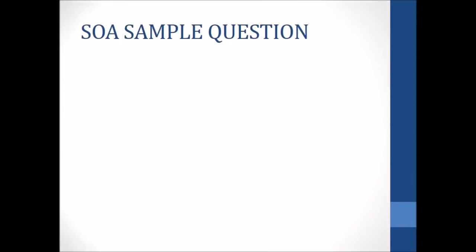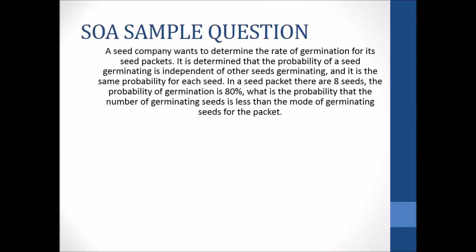Now let's take a look at an SOA sample question. So let's take the exact same problem, but this time let's look at the very last sentence there after the third comma. It says, what is the probability that the number of germinating seeds is less than the mode of germinating seeds for the packet?